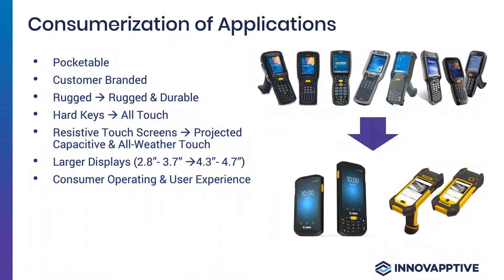Looking at the consumerization of applications hitting the enterprise landscape — on the right of the screen, what you see on top is your traditional warehouse barcoding devices, and what you see below is the change that's coming. Consumerization of applications in the industrial mobile solution space has driven proliferation of device choice, larger screen sizes, and the use of touchscreens replacing push-button keypads. End of the day, it's about giving your workers a similar experience to their own personal devices.